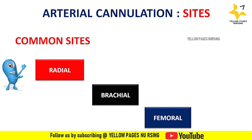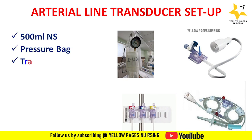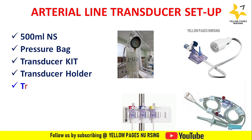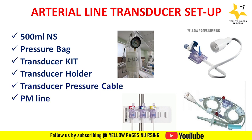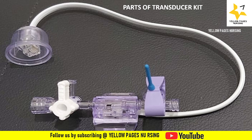For an arterial line transducer setup, we need a 500 ml normal saline pressure bag, transducer kit, transducer holder, transducer pressure cable, PM line, IV drip set, and syringe. The PM line and IV drip set may be pre-attached to the transducer set in some kits; if not, they need to be arranged separately.